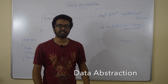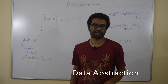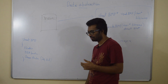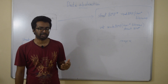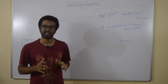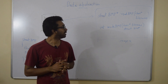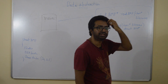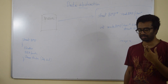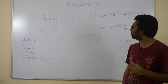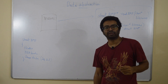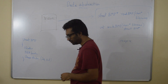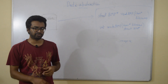In this lecture we are going to look at data abstraction. Here is our image.cc file which reads and writes BMP images, and here is a main program which is going to use this image.cc file.